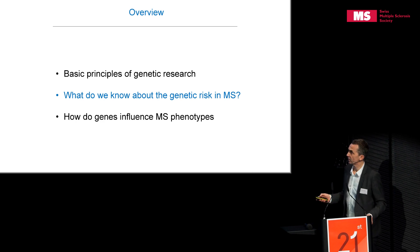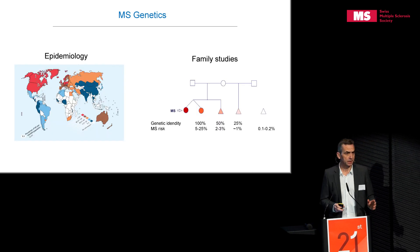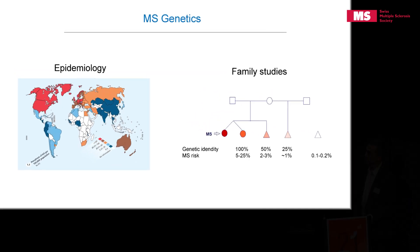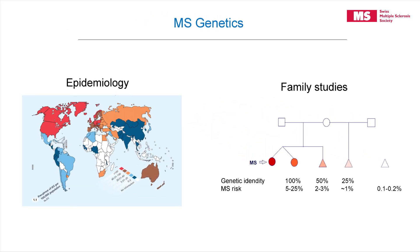What do we know about multiple sclerosis and genes? The evidence that genes play a role in MS is strong from two areas. First, the worldwide distribution of multiple sclerosis shows that MS is very frequent in Caucasians living in Europe, North America, and Australia, and very rare — though increasing — in Asia. This ethnic background to multiple sclerosis indicates it's not only environment. Environment is also important, but it's not the only factor.